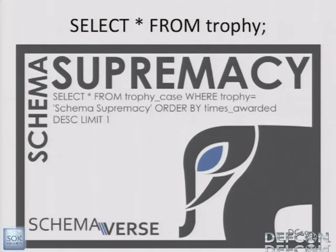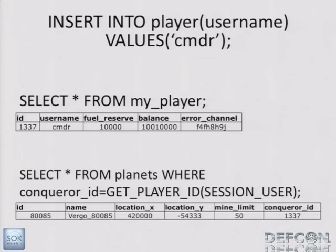So how do you actually play? You come to me or anyone at the contest booth and ask to register. When you register, you get inserted into the player table, and then you get an actual user account on the database — yes, you are a user on the database. You get a row in the players table, and you get a planet assigned as your home planet. When you start out in the player table, you've got some money — about 10 million — and a fuel reserve to get you started. You also have something called an error channel, which I'll get to later. On your planet, you can see it has a location, a name which you can update, a mine limit — only that number of ships can mine that planet per tick — and finally the conqueror ID, which is you.